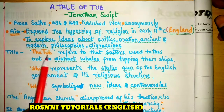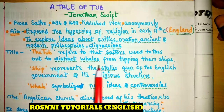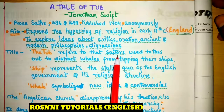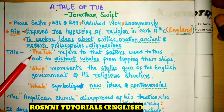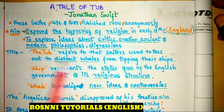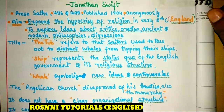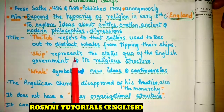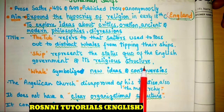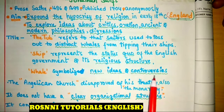Let's move to the title now — 'The Tub.' This tub refers to what sailors used to toss out to distract whales from tipping their ships. Sailors kept this tub and threw it in the water to distract the whales, keeping themselves safe. But this has symbolic representation: the ship represents the status quo of the English government and its religious structure, and the whale symbolizes new ideas and controversies.